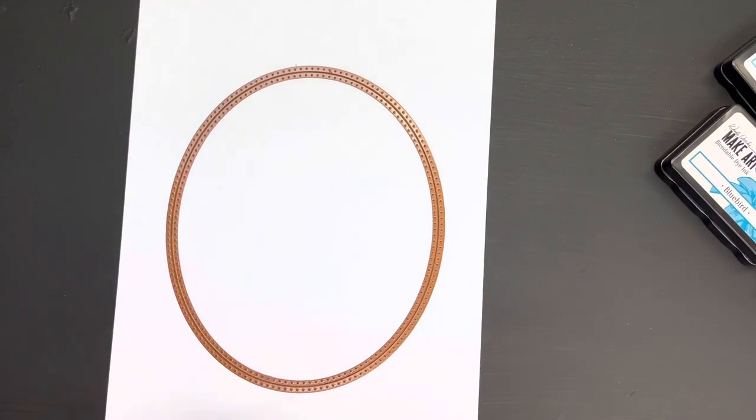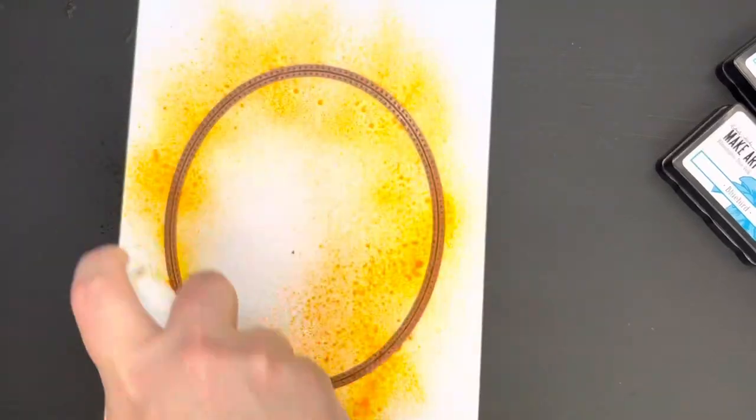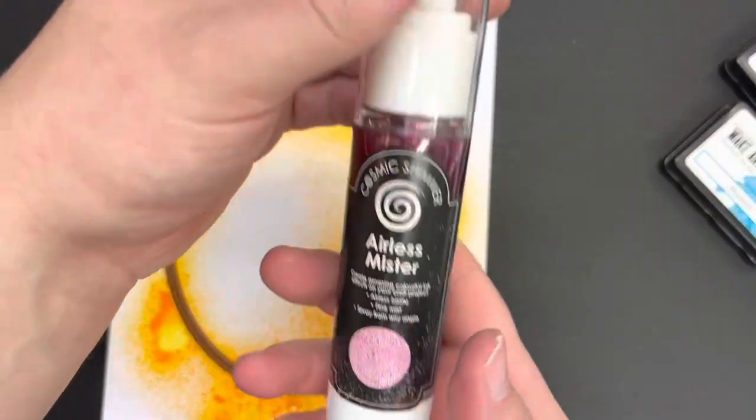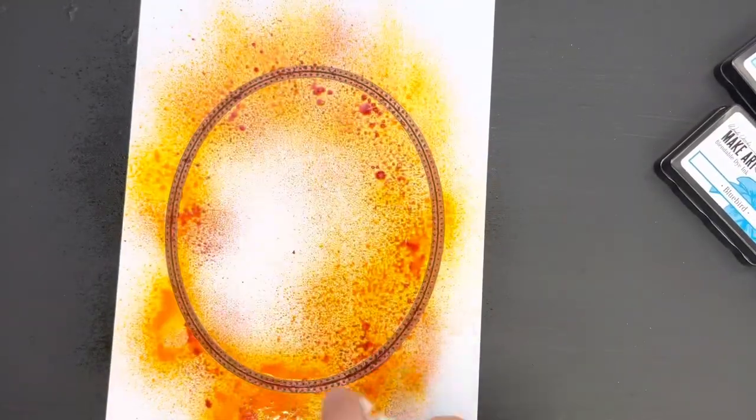Now dies have been used as stencils for many moons and normally that means that we actually die cut the element, leave the die in place and stencil through to add color on top of the piece that we've die cut. But there is a different way that we can do this and this is what I wanted to talk about in today's video.